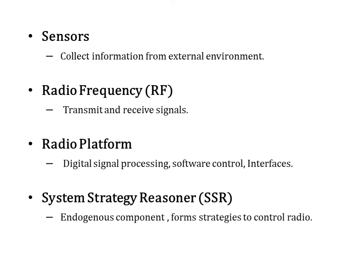Next comes the sensors. In a cognitive radio that implements dynamic spectrum access, sensors are used to collect information from the external environment and discover the available spectrum and transmission opportunities. The RF components are used to transmit and receive signals.